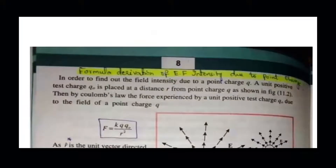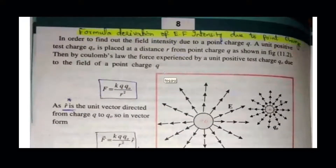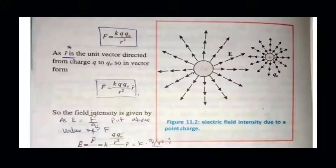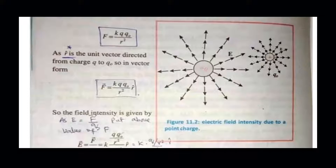Now the last part: the derivation of the formula for electric field intensity. Looking at this figure, the positive charge has arrows pointing outward, representing a positive charge's electric field — because the electric field of a positive charge always points outward. We consider both charges and the distance between them as R. The force of repulsion follows Coulomb's law.